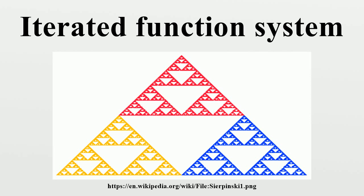Early examples of fractals which may be generated by an IFS include the Cantor set, first described in 1884, and de Rham curves, a type of self-similar curve described by Georges de Rham in 1957. IFSs were conceived in their present form by John E. Hutchinson in 1981 and popularized by Michael Barnsley's book Fractals Everywhere. IFSs provide models for certain plants, leaves, and ferns, by virtue of the self-similarity which often occurs in branching structures in nature.